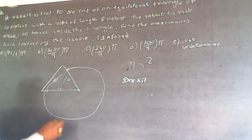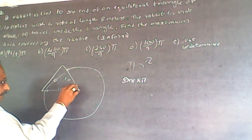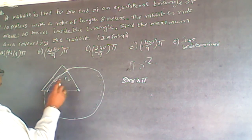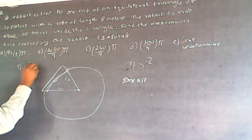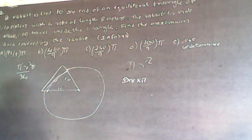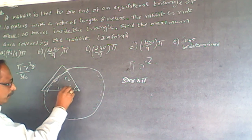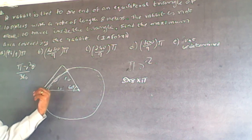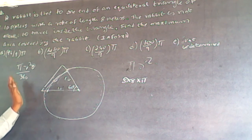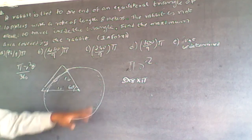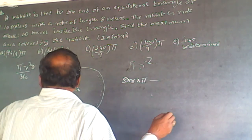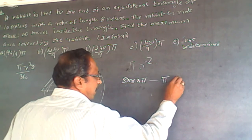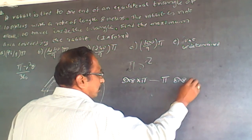But the rabbit can't go inside the triangle, so we use the area of a sector. The formula for the area of a sector is π r² × θ/360. Because it is an equilateral triangle, the angle at the tied vertex is 60 degrees — since all angles are equal and the total is 180°, one-third is 60°. So the sector area to subtract is π × 8² × 60/360.